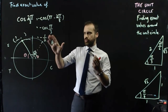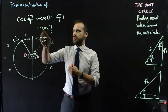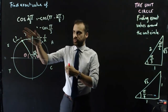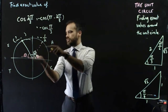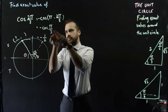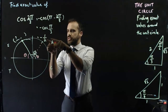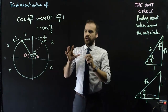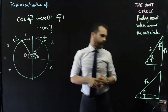So our answer is: cos 2 pi on 3 equals negative 1 half — negative because we're in the second quadrant and it's cosine, using reference angle pi on 3, and cos pi on 3 is 1 half. This stuff gets confusing, so we are going to do quite a few more.